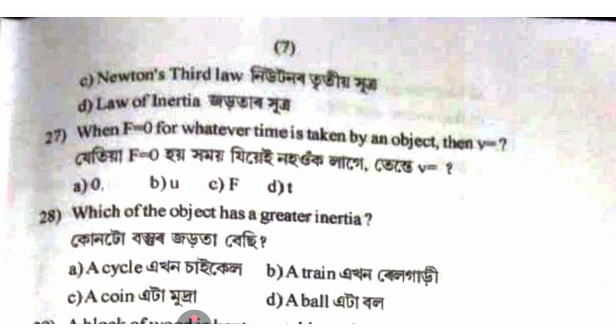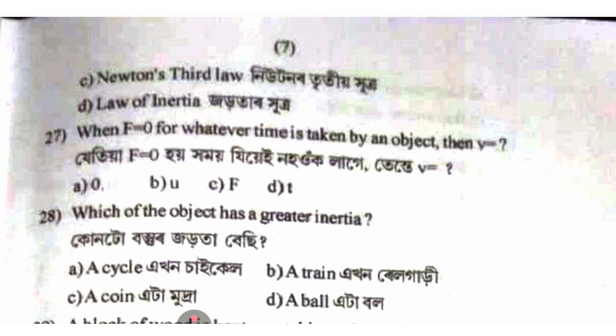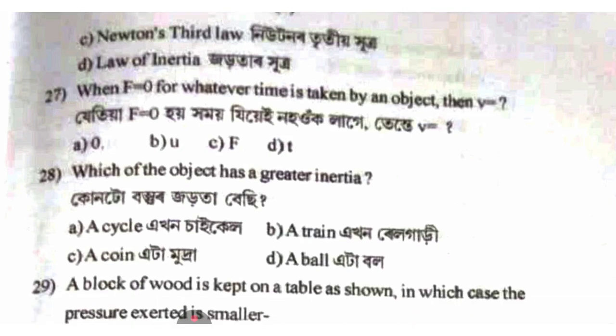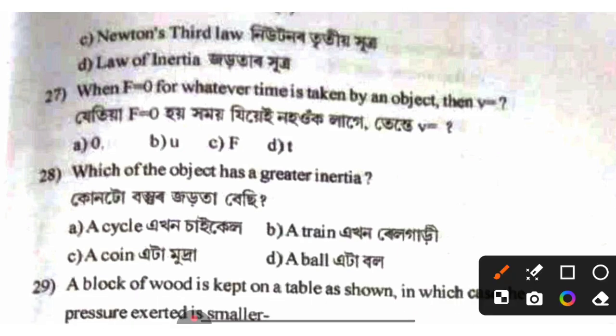When a vehicle's velocity is zero for whatever time is taken by an object, the vehicle's velocity remains zero — this relates to Newton's laws of motion.